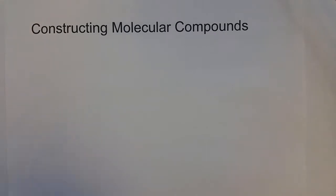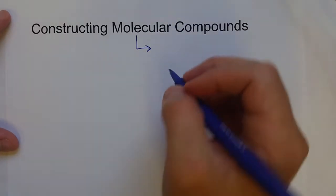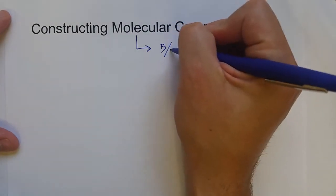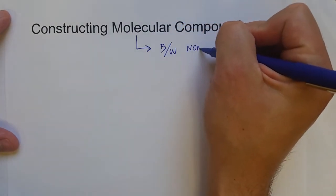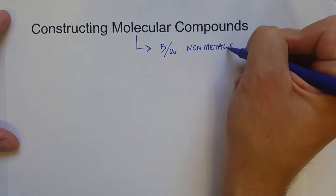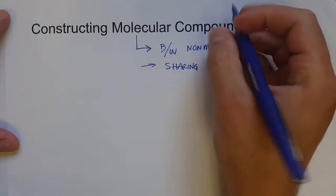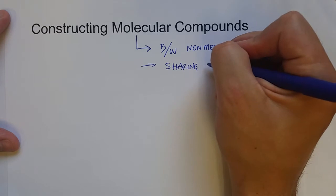We're going to use a different set of rules for constructing molecular compounds. The difference between molecular compounds and ionic compounds is that molecules are between non-metals and they are sharing valence electrons, not transferring them or forming ions.